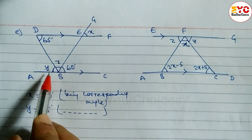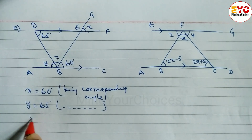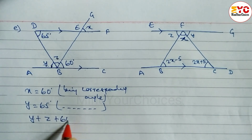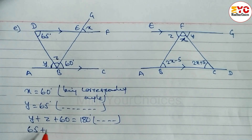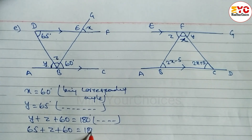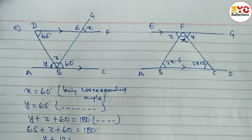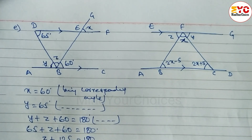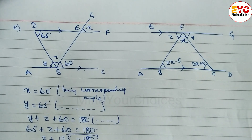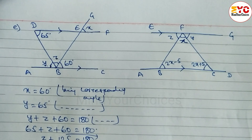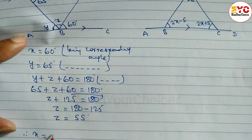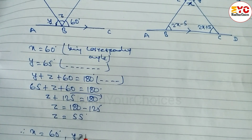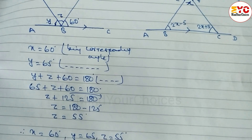Now we have to find out the value of z. Y plus z plus 60 is equal to 180 degrees — reason: the sum of angles of the triangle. Substituting y equal to 65: 65 plus z plus 60 is equal to 180. Z plus 125 is equal to 180, so z is equal to 180 minus 125. Therefore z is equal to 55 degrees. So x is equal to 60, y is equal to 65, and z is equal to 55 degrees.